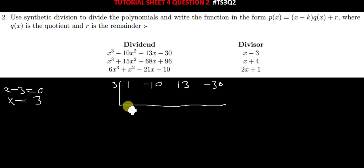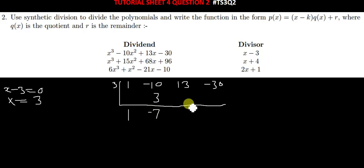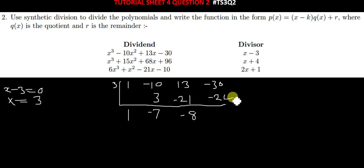You bring down this 1. Then multiply 3 times 1, you get 3. When you add negative 10 plus 3, you get negative 7. Then you multiply 3 times negative 7, you get negative 21. Negative 21 plus 13 gives you negative 8. Then multiply 3 times negative 8, you get negative 24. When you add, negative 30 plus negative 24 gives you negative 54.